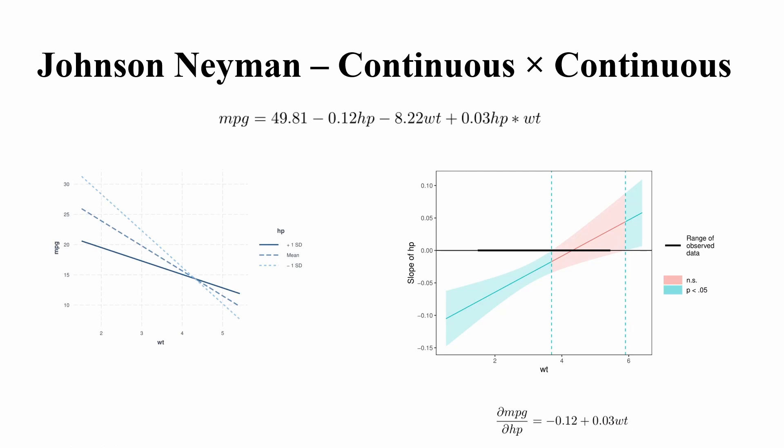So if the interaction is continuous and continuous, generally we use what's called spotlight analysis. We use spotlight, so you can say that we use the horsepower plus or minus standard deviation and then we find these two key points, focus points, and then we plot two lines and you can also plot another line called mean.